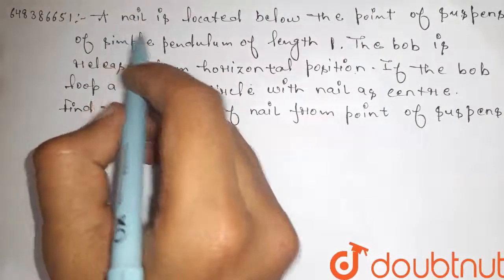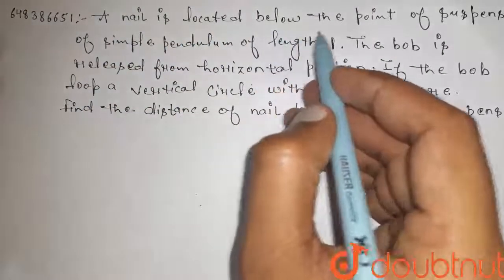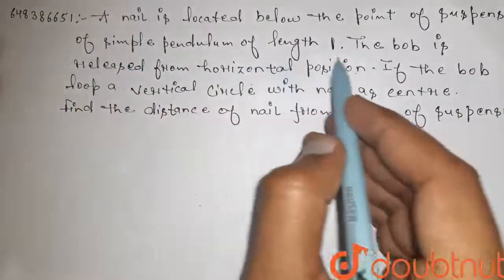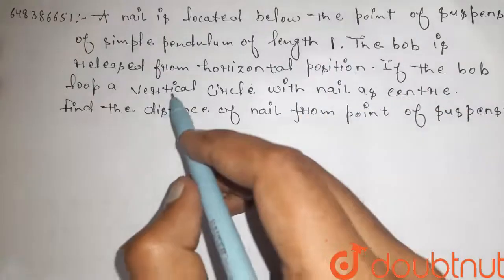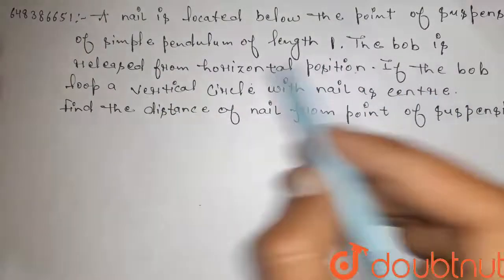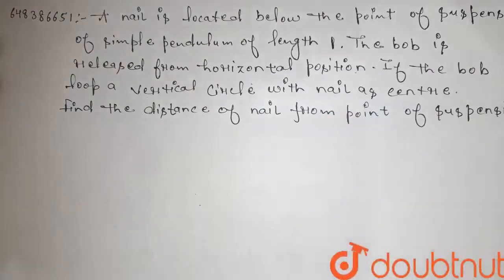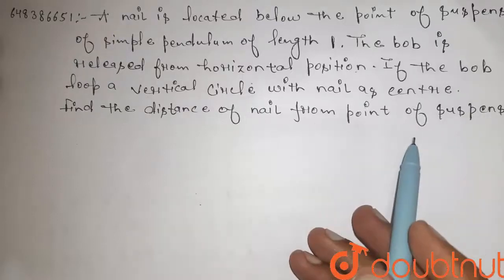Hi guys, here is the question. A nail is located below the point of suspension of simple pendulum of length L. The bob is released from horizontal position. If the bob loop a vertical circle with nail as center, find the distance of the nail from the point of suspension.